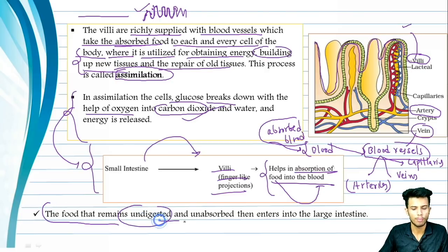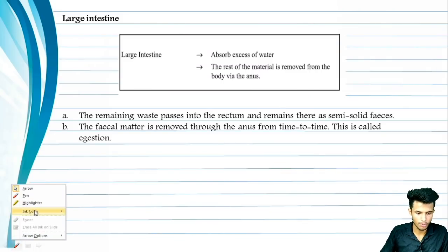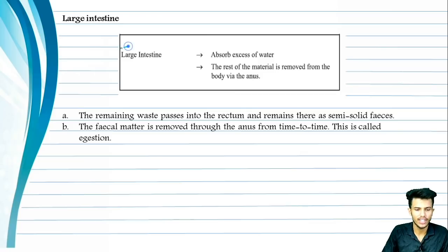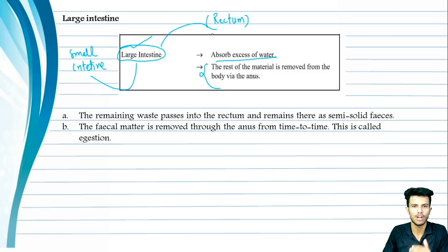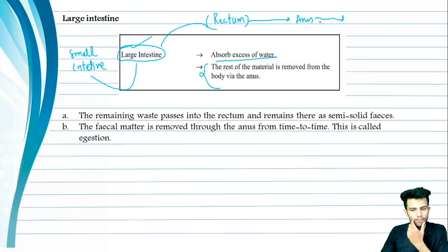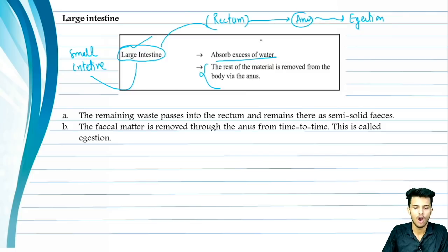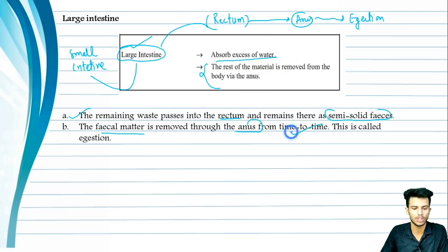The food that remains undigested is not absorbed and goes into the large intestine. From the small intestine it passes to the large intestine, and then to the rectum. The rectum is the part of the digestive system where undigested food is stored. From the rectum, it exits the body through the anus. The remaining waste passes into the rectum as solid faecal matter, which is removed through the anus from time to time. We call this process egestion.